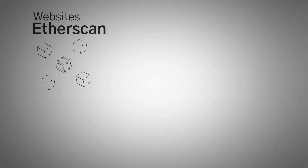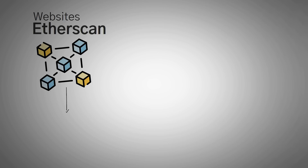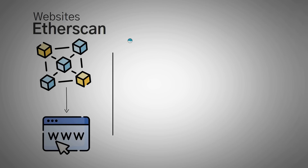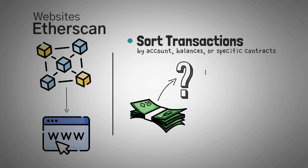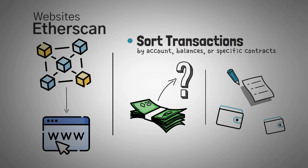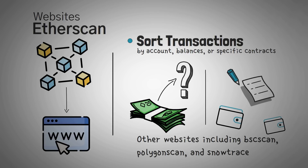Lastly, let's cover some general Web3 tools — commonly visited websites useful for all kinds of Web3 development. First up is Etherscan. Etherscan is a blockchain explorer that takes the blockchain and displays it as a website so you can search for things on the blockchain. This way, we can easily sort transactions by account, balances, or specific contracts, and easily trace where money goes or what account interacts with which contract. Etherscan is the main website, but they've created versions for other blockchains including BSC Scan, Polygon Scan, and SnowTrace.